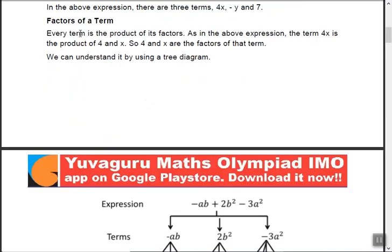Factors of a term: every term is a product of factors. For example, 4x means 4 multiplied by x, so the factors of the term 4x are 4 and x. Similarly, 6 equals 2 into 3, so the factors of 6 are 2 and 3. The numbers which are multiplied together to form that value are called its factors.